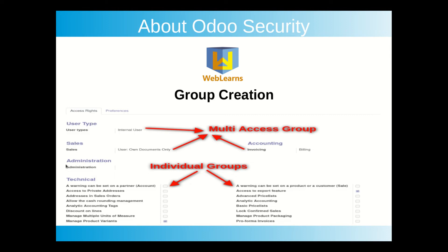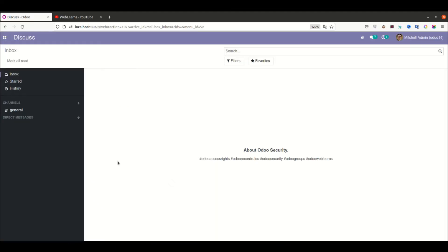You can also see group categories — for example, sales, administrator, or technical. You can create a group category and under that category define groups. Don't worry about how to create groups, access rights, or record rules in detail — this is just a brief introduction to Odoo security. Let's go back to the user profile for more context.